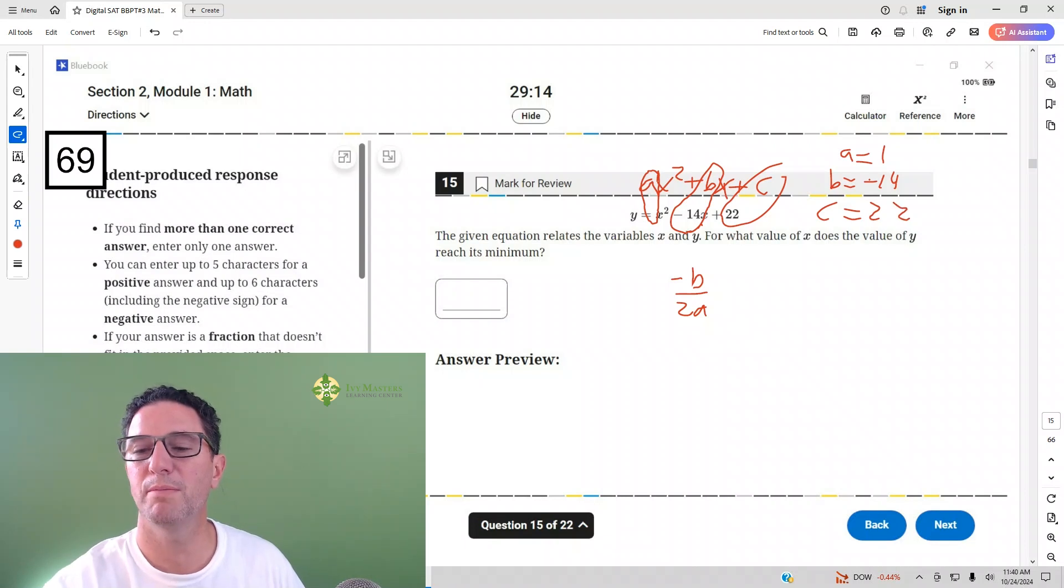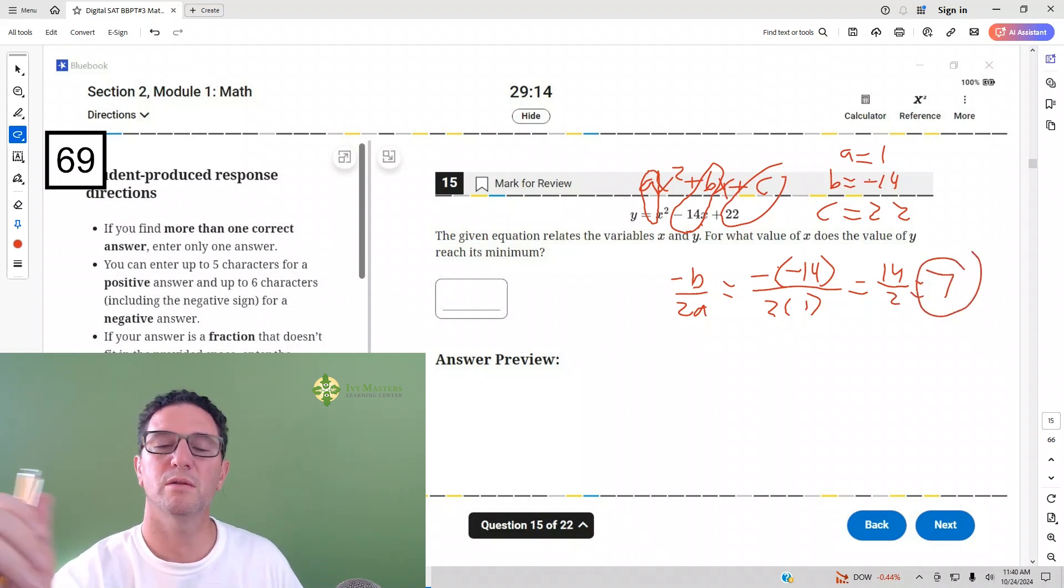And then your C is 22. C is 22. We don't need that. So if it's negative B, it's a negative negative 14 over 2A over 2 times 1. So negative negative 14 is a 14 over 2, which is 7 is going to be your answer.